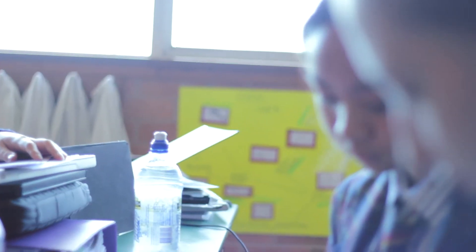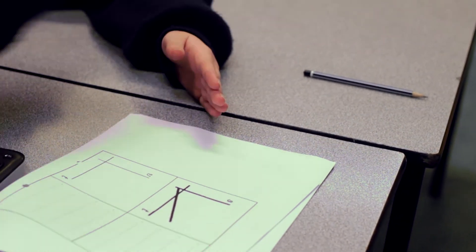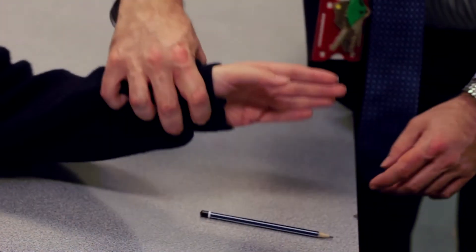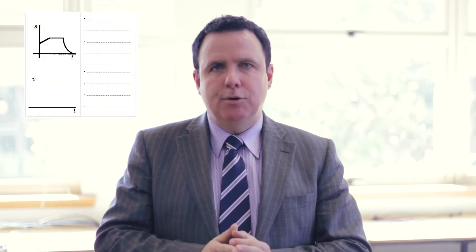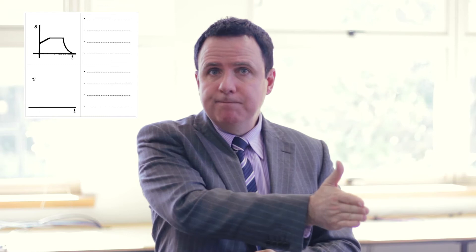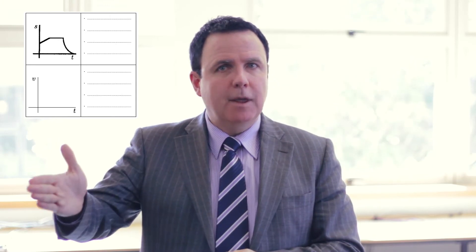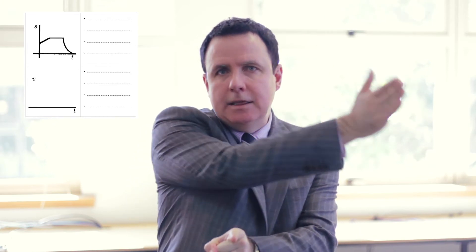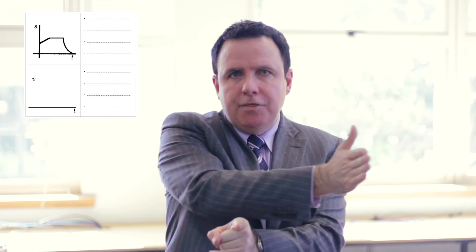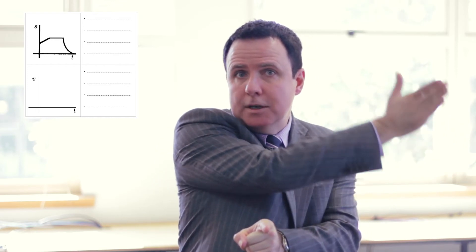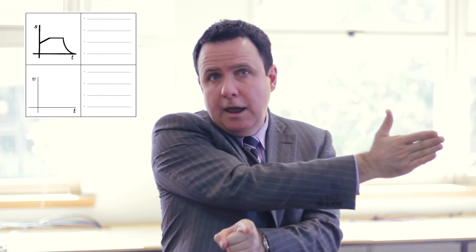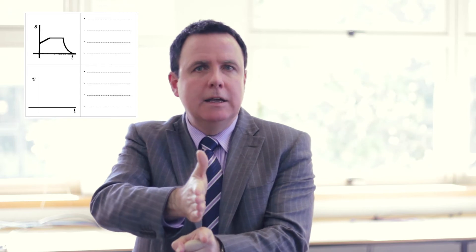Students first place an object on the desk to indicate the origin. They then decide on a sign convention — that is, which direction will be the positive direction and which direction will be the negative direction. In this example, positive will be to your right and negative to your left. The graph tells us that the object starts some distance in the positive direction from the origin. It then moves at a constant speed for a time, stops, and then finally moves back towards the origin — at high speed first, and then slowing down until it stops.